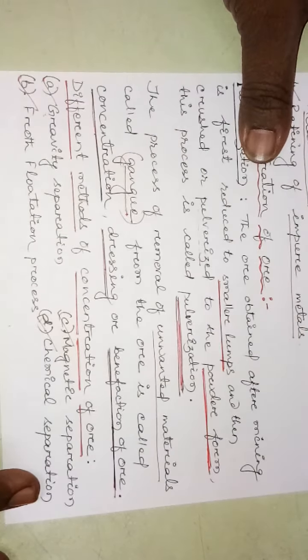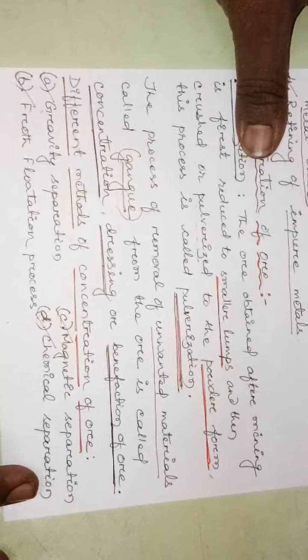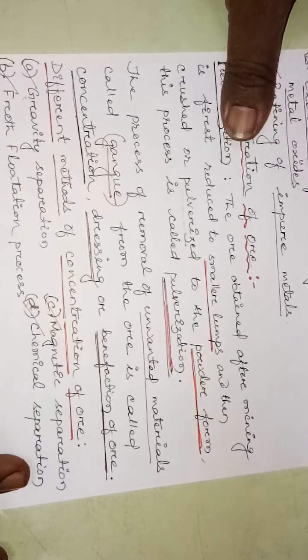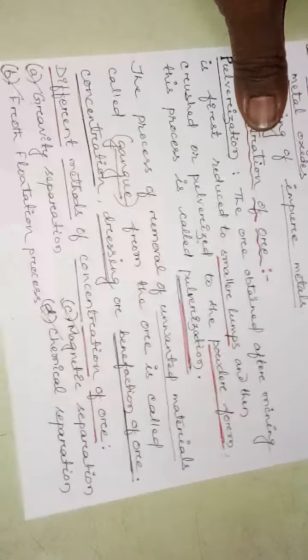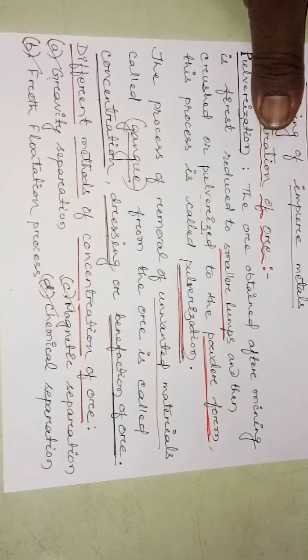So, we discussed what is metallurgy, different terms like gang, ore, mineral, flux, and slag, then the different processes involved in metallurgy to extract a pure metal from its ore. Next class we will discuss in detail about these four different methods of concentration. Thank you.